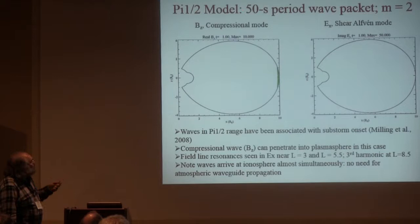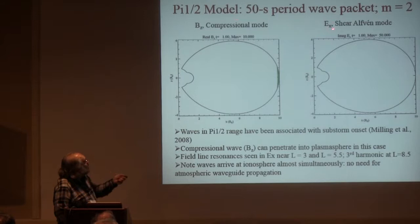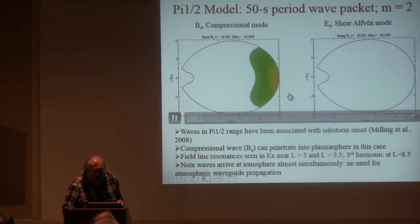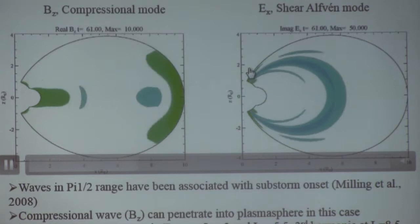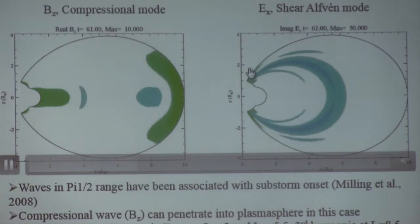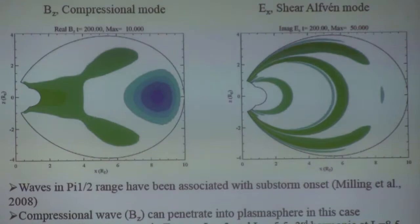BZ is the compressional component of the magnetic field; EX is the shear component of the shear Alfvén wave. The compressional wave comes in and bounces around — you can see a nice little mode in the plasmasphere. Over here you see very nicely the development of field-aligned structures. This is the mode conversion that takes place between the fast mode and the shear mode. There are actually two fundamentals — one in the interior, one right at the plasmapause — and you can see evidence of a third harmonic, which is consistent with the pictures we have.